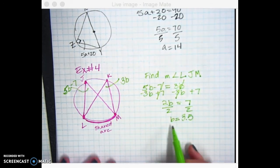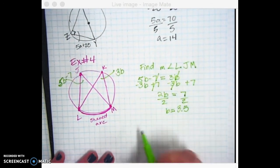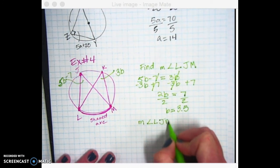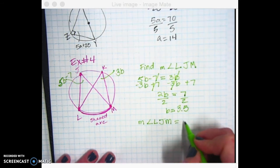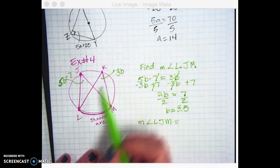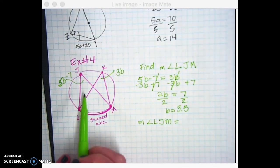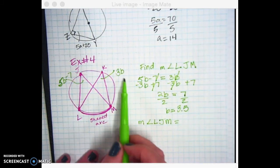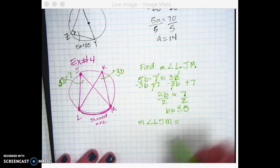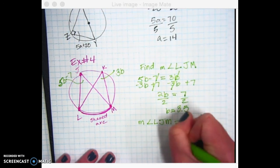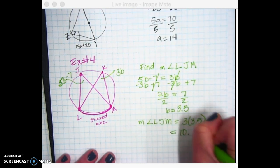And we'd be done if they were just asking us for B, but they want us to plug it back in. So the measure of angle LJM is going to be equal to, and it doesn't matter which one we plug it into. Because they're equal. They're sharing that same arc. So which one looks easier, the 5B minus 7 or the 3B? 3B. So I'm going to go 3 times 3.5. Punch it in my calculator. I got 10.5 degrees.